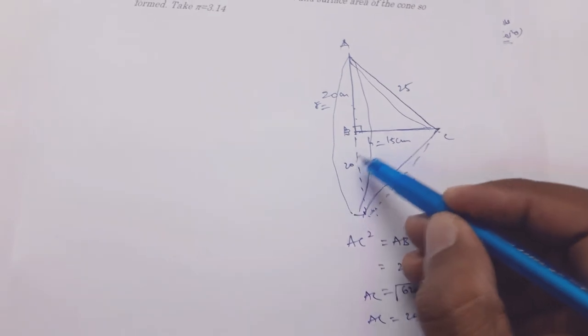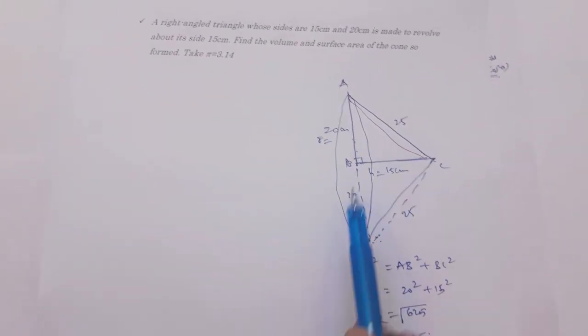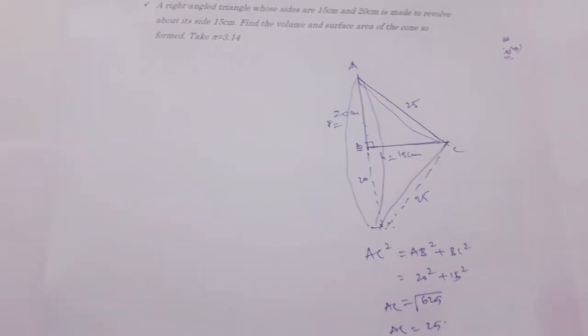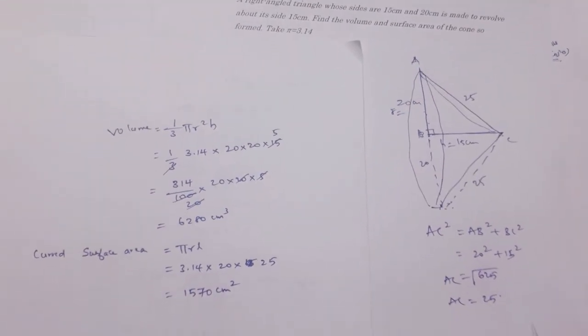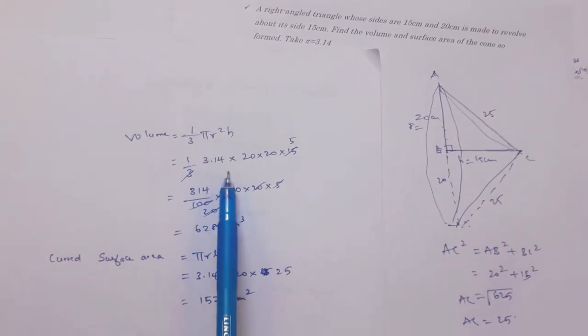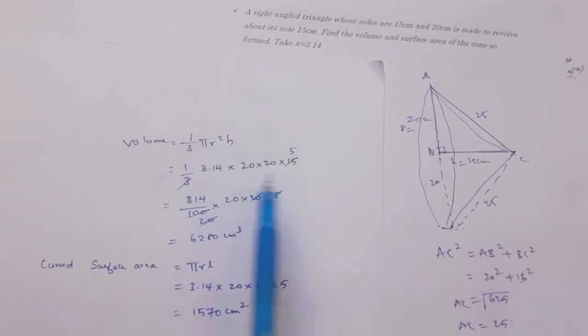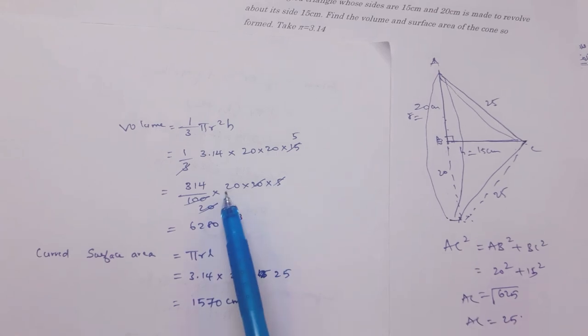So here radius will be 20. If it is revolved along the side 15. Now find the volume. See, this is the volume of the cone: 1 by 3 pi R square H. Here 1 by 3 pi, take 3.14. Radius is 20 and height is 15. If we will substitute.